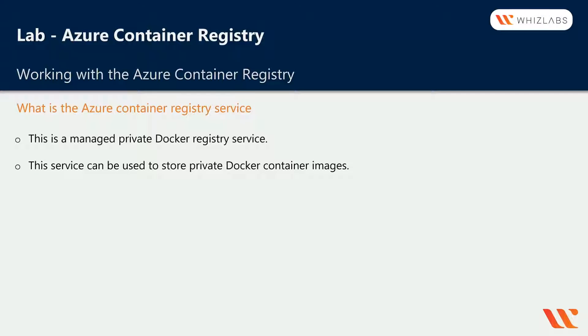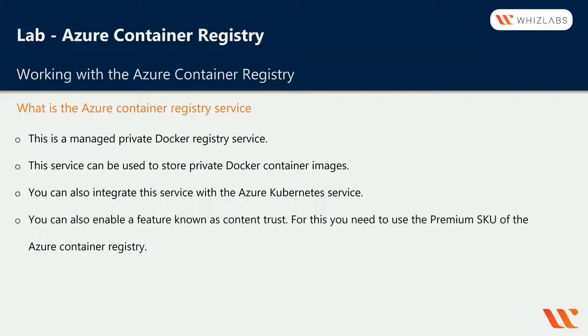This service can be used to store private Docker container images. You can also integrate this service with the Azure Kubernetes Service, which is a managed orchestration service for your Docker containers. You can also enable something known as content trust, which adds an additional level of security when it comes to the Docker registry service.